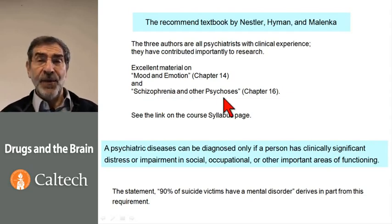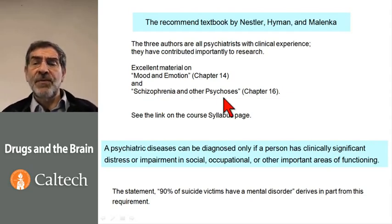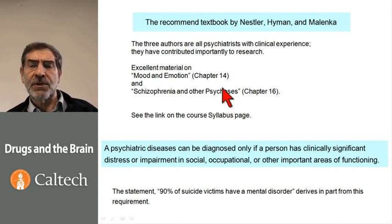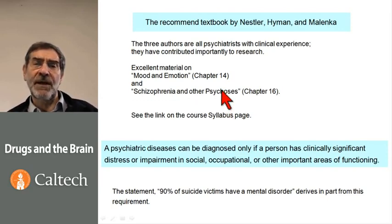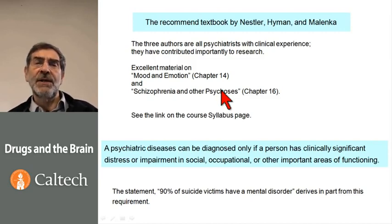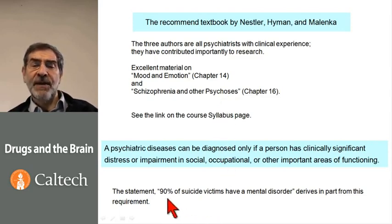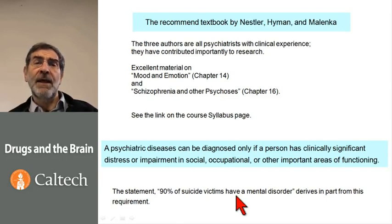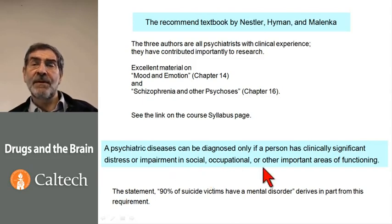I'd like to remind you that a psychiatric disease can be diagnosed only if a person has clinically significant distress or impairment in social, occupational, or other important areas of functioning. So those societies that try to marginalize people if they are politically or socially inconvenient by calling them mentally ill are actually not adhering to our definition of mental illness. The other point is that the statement '90% of suicide victims have a mental disorder' derives in part from the assumption that any person who destroys himself has significant distress or impairment in his functioning.